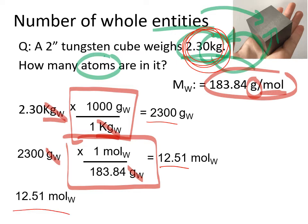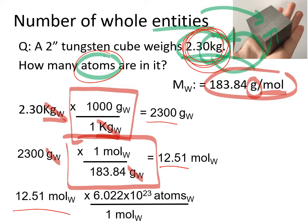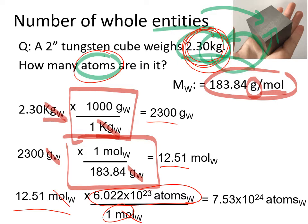Now I take my number of moles and convert to atoms using Avogadro's number as a conversion factor — moles on the bottom to cancel out. In one mole there are 6.022 × 10²³ atoms, in this case atoms of tungsten. Running that through the calculator, moles cancel out and the final answer is in atoms. Our precision is three sig figs, so the answer must also be in three sig figs.